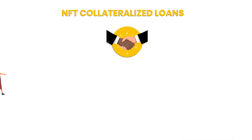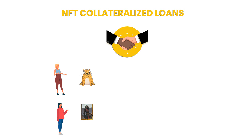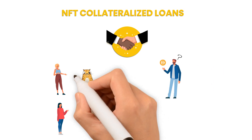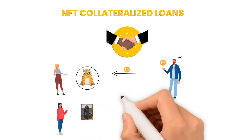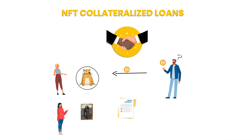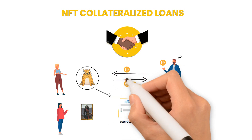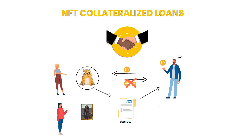In this marketplace model, borrowers can offer up NFTs as collateral and lenders can choose which NFT they are willing to accept before initializing a loan. The NFT that is used as collateral is kept in an escrow contract, and if the borrower defaults on their loan by not repaying the borrowed amount plus interest on time, the NFT is transferred to the lender. This space is really new, but one of the companies that use this model is NFTfi.